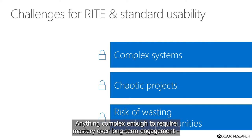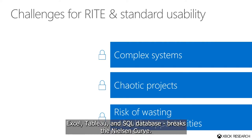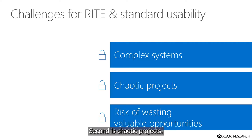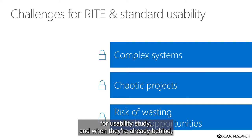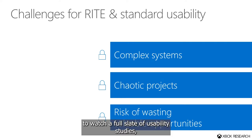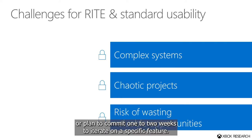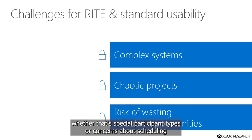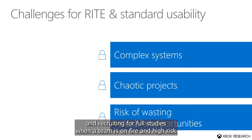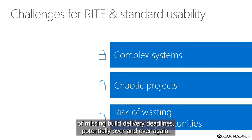Anything complex enough to require mastery over long-term engagement — Excel, Tableau, SQL database — breaks the Nielsen curve. The second challenge is chaotic projects. When projects are on fire, teams can struggle just to commit to deadlines for a usability study. When they're already behind, it can be hard for them to take out a week to watch a full slate of usability studies or plan to commit one to two weeks to iterate on a specific feature. This can lead to feeling like there's a risk of wasting valuable opportunities, whether that's special participant types or concerns about scheduling and recruiting for full studies when a team is on fire and at high risk of missing build delivery deadlines.